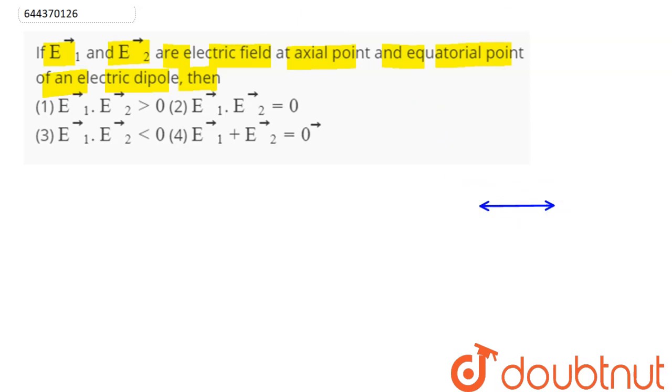The electric field at axial point here will be in the direction of dipole moment. If dipole moment here is along plus x axis, so electric field at this position will be along the dipole moment.